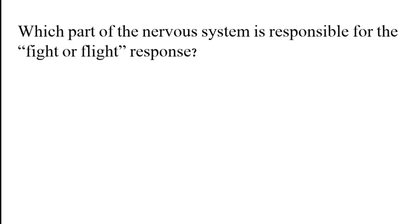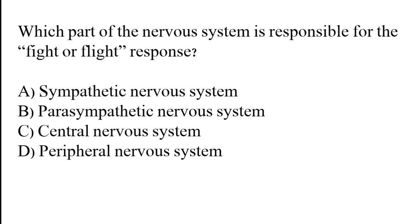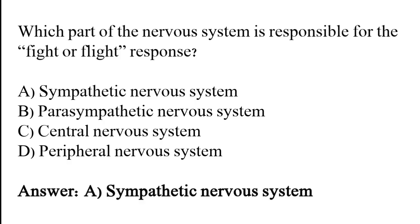Which part of the nervous system is responsible for the fight or flight response? Options: Sympathetic nervous system, Parasympathetic nervous system, Central nervous system. The correct answer is option A. The sympathetic nervous system is the part responsible for the fight or flight response.